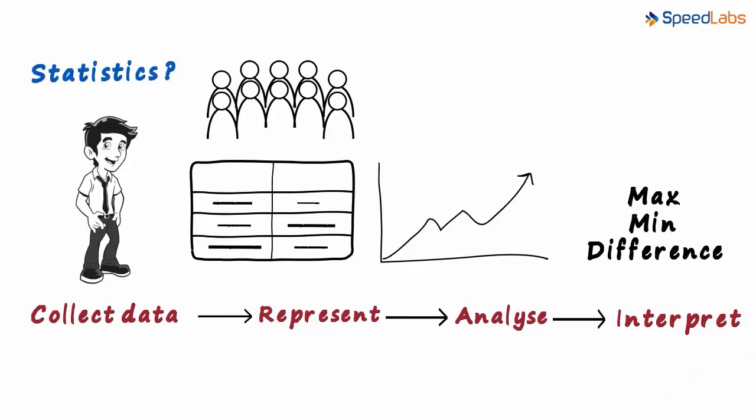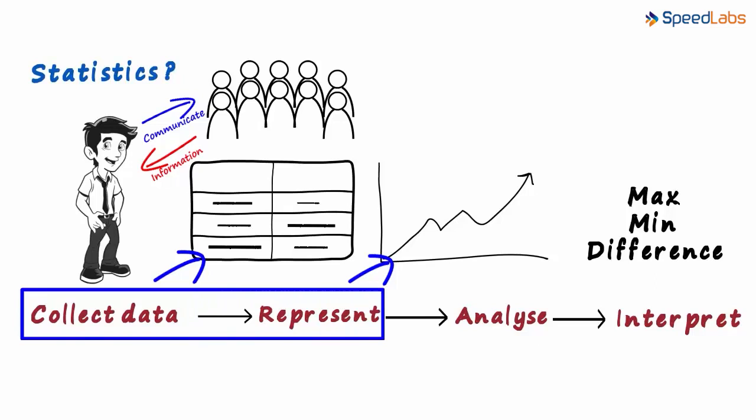Let's review it. Zen wants to know something about a group of people. He communicates with them and gets raw data. To make it easier to understand, Zen organizes the data and represents it well. Then he analyzes the data, and finally he makes his interpretations.